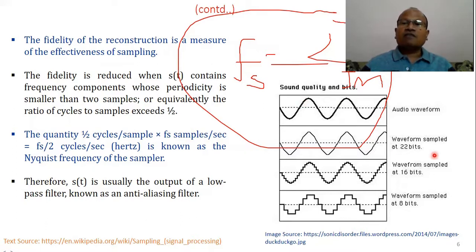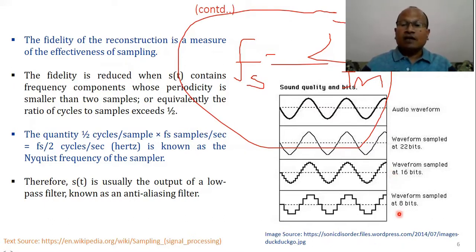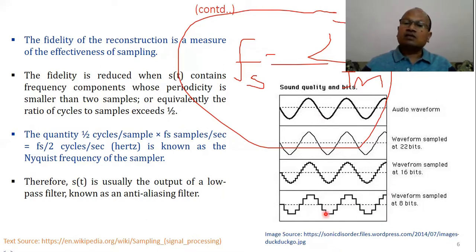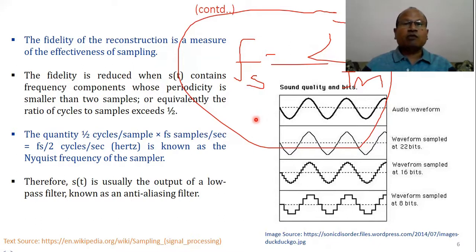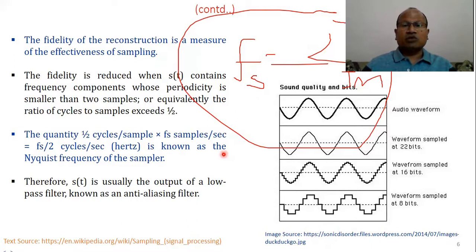Looking at an audio waveform sampled at 22 bits per second: when we decrease the sampling, the reconstructed quality is not good — it is worse. When you reduce the sampling bits further, the deviation is more and the reconstructed signal quality is poor. More bits means better quality. More samples per unit time requires more bits to represent those samples, so higher sampling rate means better reconstruction quality.